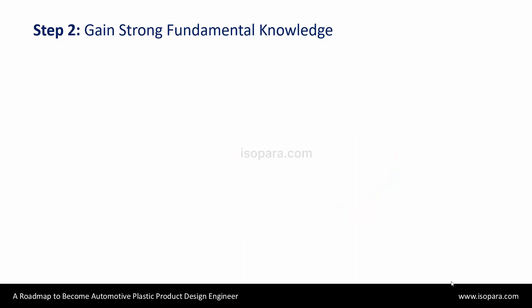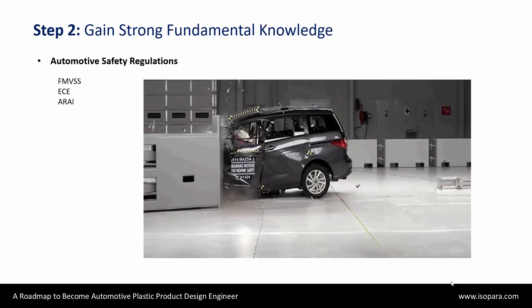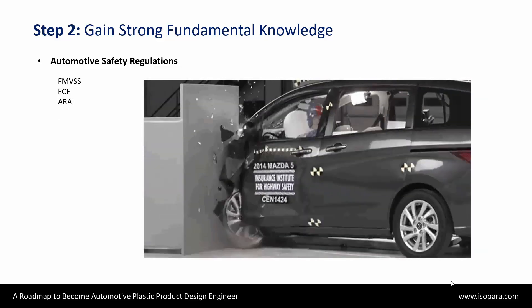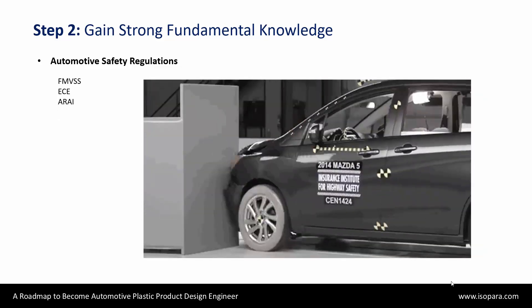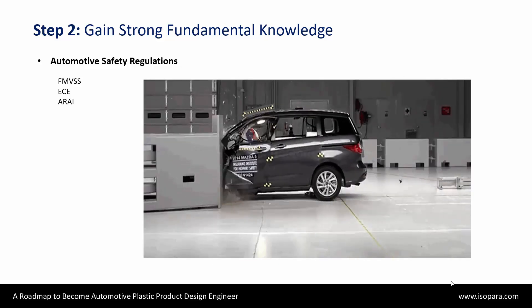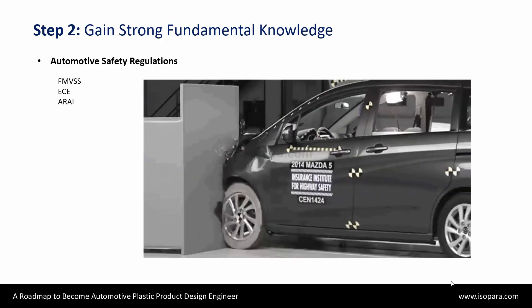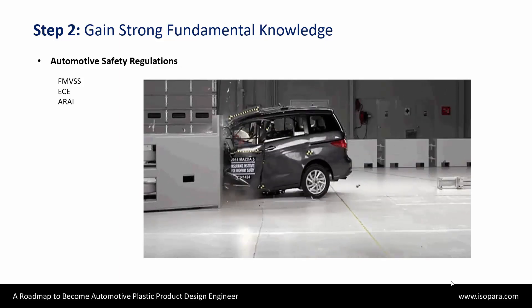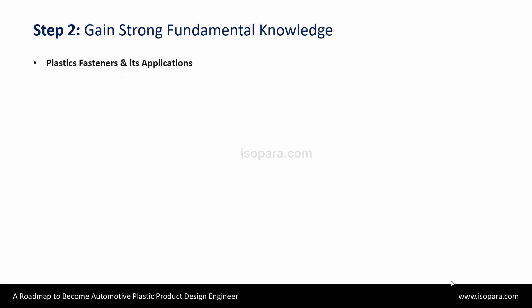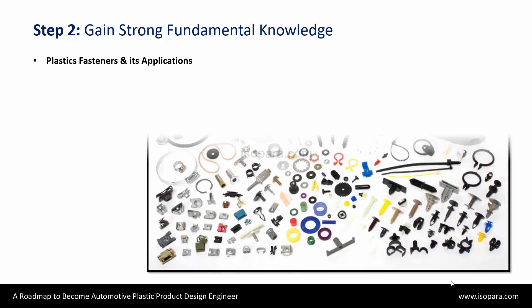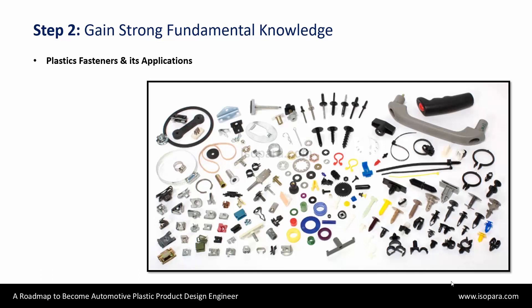You have to gain knowledge related to safety regulations. There are three major safety regulations: American FMVSS (Federal Motor Vehicle Safety Standards), European ECE, and Indian AIS from the ARAI organization. You will learn about the different fasteners and their applications, how they are used in the automotive segment, and what are their advantages and disadvantages.